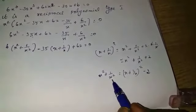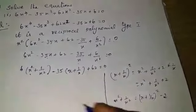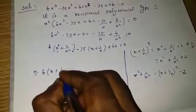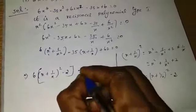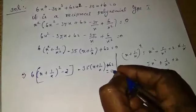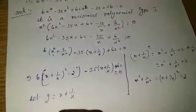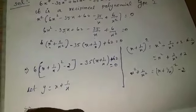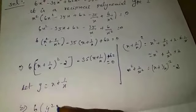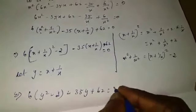Substitute the value of x² plus 1 by x² equal to (x plus 1 by x)² minus 2 into the equation. Let y equal to x plus 1 by x. So we get 6 times (y² minus 2) minus 35y plus 62 equal to 0.